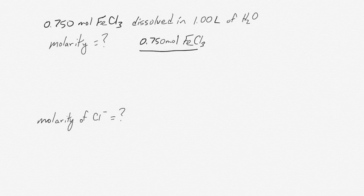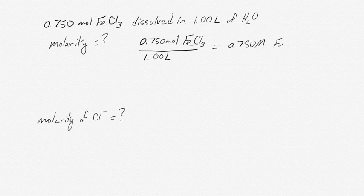So we have 0.750 moles of FeCl3, and we divide that by 1.00 liters of water, and we end up with a value of 0.750 molar FeCl3. So the molarity of iron 3 chloride is pretty easy to calculate.